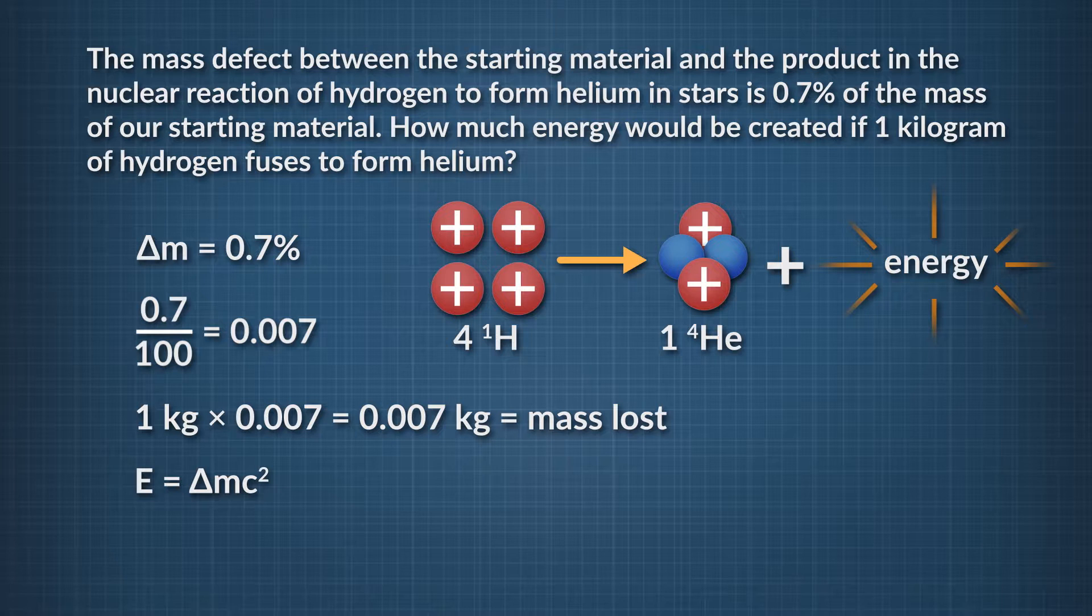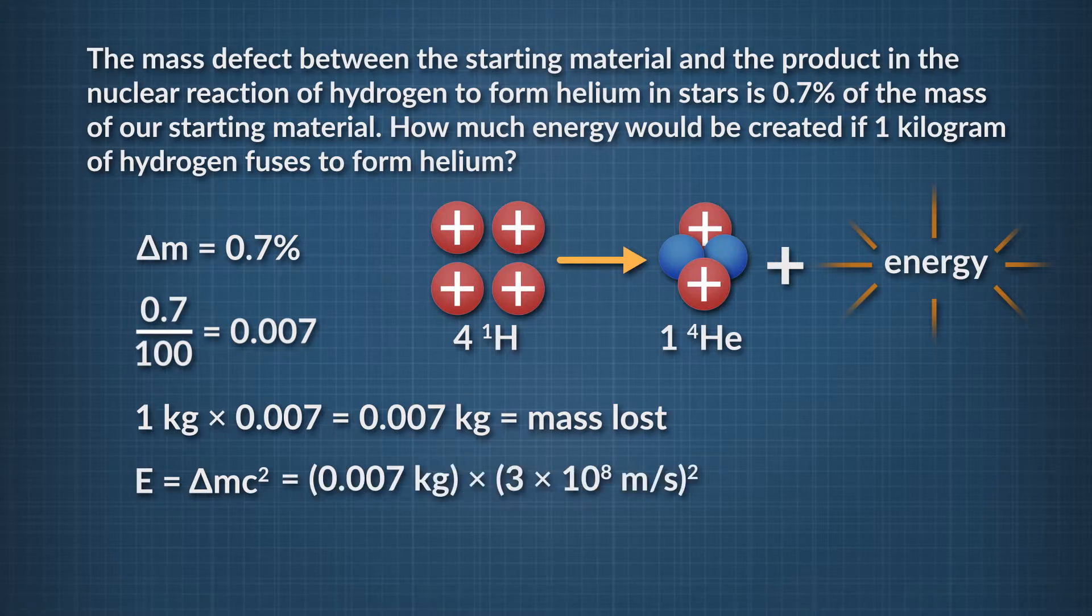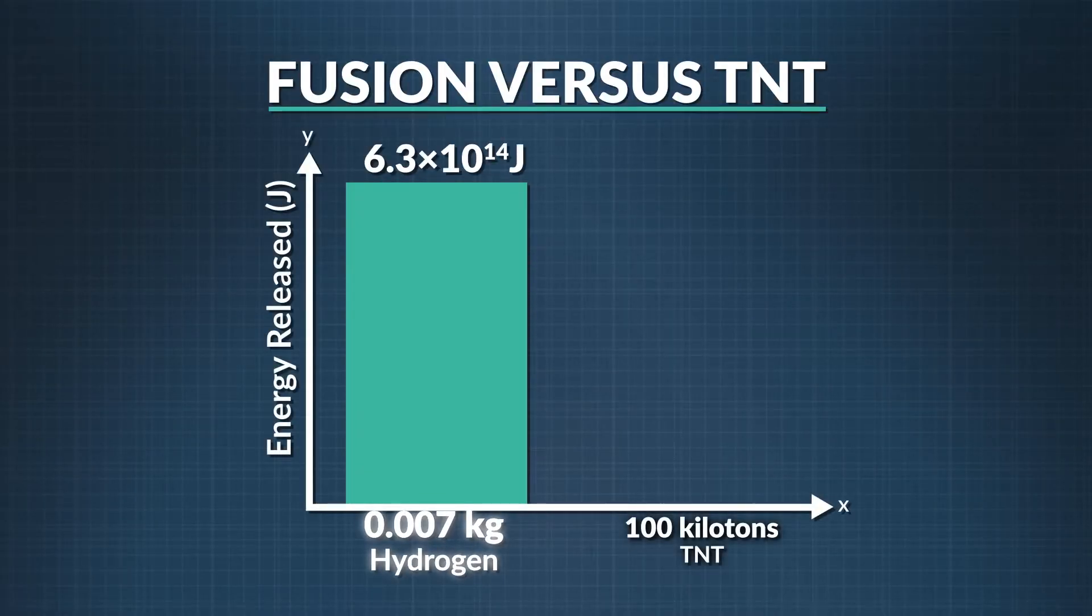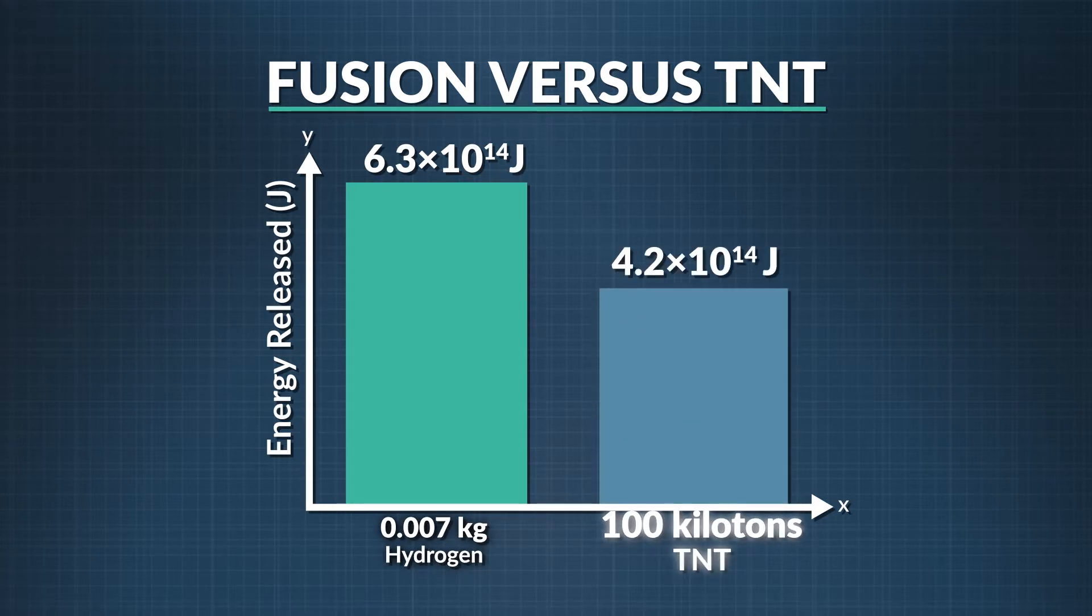We end up with a value of 6.3 times 10 to the 14 joules of energy that's created in the fusion of just 1 kilogram of hydrogen. This amount of energy is greater than what 100 kilotons of TNT puts out when it explodes. Think about that. 0.007 kilograms of hydrogen has more energy than 100 kilotons of TNT.